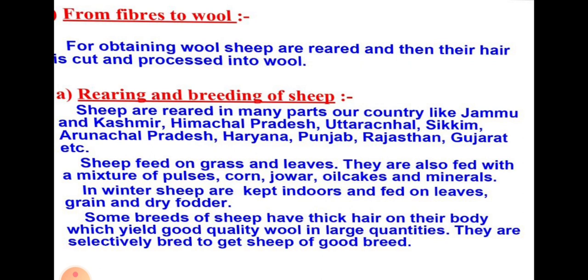The next topic is production of wool — that is, from fibers to wool. Wool comes mainly from sheep. In order to obtain wool, sheep are reared and bred. Their hair is cut and processed into wool. We will first discuss the rearing and breeding of sheep, then describe how the sheep's hair is cut and processed to make wool yarn.